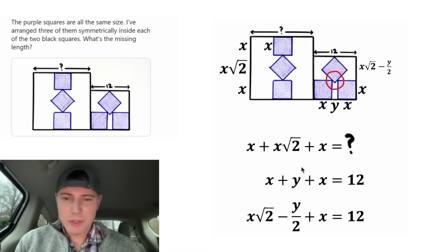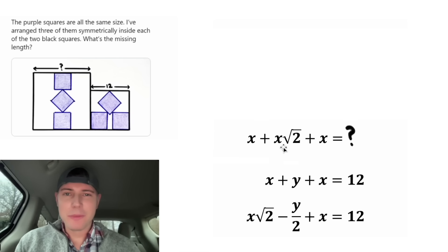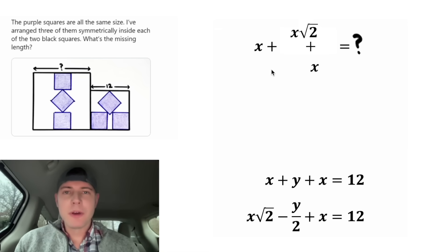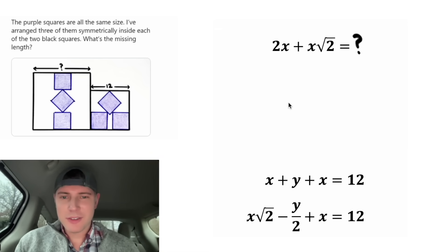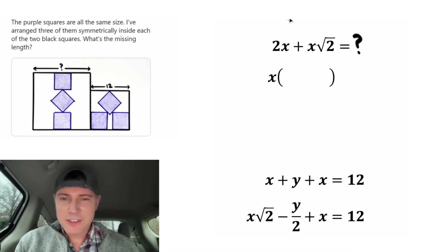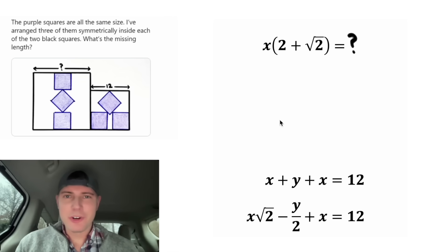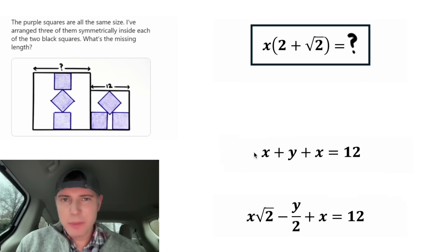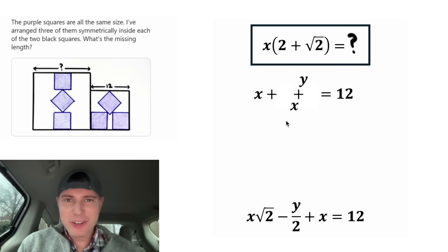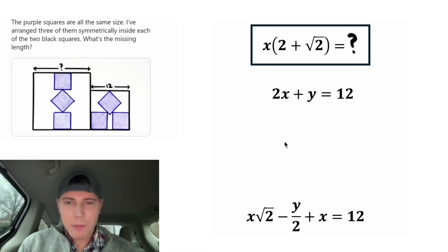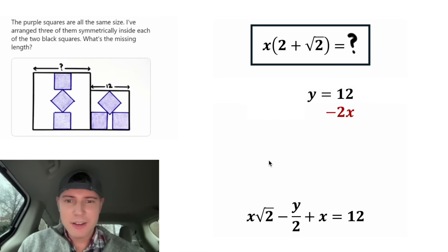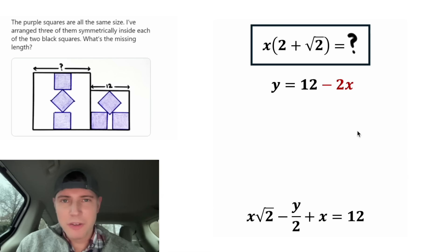These two should be everything we need. Let's rearrange — X plus X is two X, and both terms contain an X, so let's factor it out. On the inside we're left with two plus root two. Next, rearranging the other equation: X plus X is two X. Let's get Y by itself by subtracting two X from both sides, leaving us with Y equals 12 minus two X.